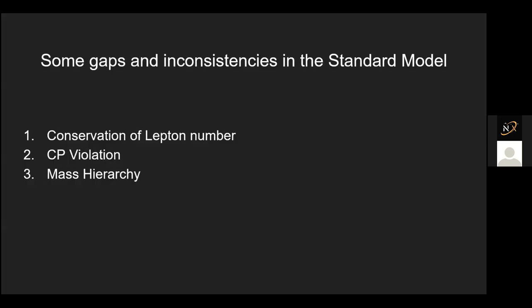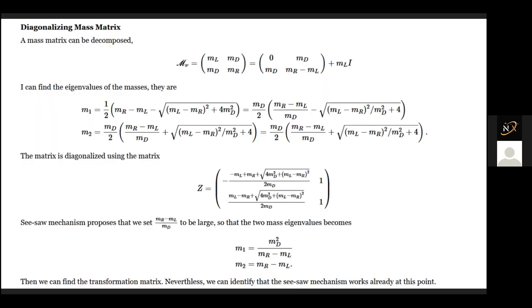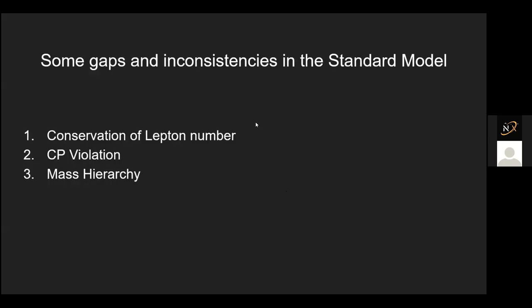We spoke about some inconsistencies in the standard model. Thanks to the Majorana mass and everything else, the conservation of the lepton number — which first came out as an empirical fact — is already disproved by neutrino oscillations, as discussed previously regarding leptonic mixing and flavor changes. The lepton number flavor is already violated.